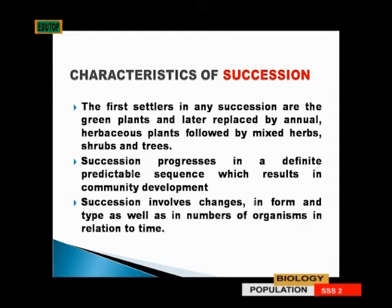The first settlers in any succession are the green plants — organisms found at the base of the food web or trophic level. They are autotrophs. Also in ecological succession, they are the first settlers. Plants are the first settlers, then replaced by herbaceous plants, then we have shrubs, then later by trees.